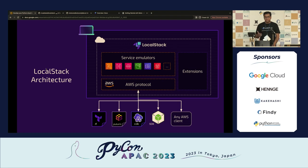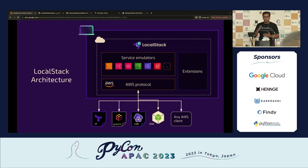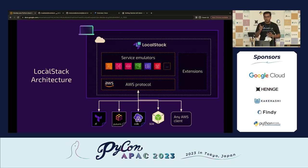The LocalStack architecture is really simple. We have LocalStack with service emulators entirely written in Python — some of our code runs to 10,000 to 20,000 lines. Then we have the AWS protocol layer, which allows integration with all AWS tools — CDK, SAM, AWS CLI. All you need to do is add one parameter: point your endpoint URL to where LocalStack is running, and your development and testing just starts.